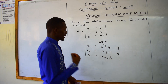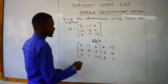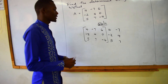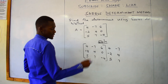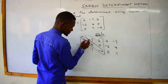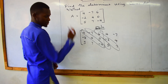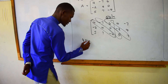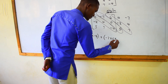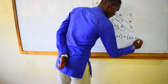Now, where does the Sarrus application come in? By the Sarrus method, you multiply the elements that appear in the main diagonal — all three of them — then add those products together. So you take 4 times 4 times negative 4, plus negative 7 times 0 times 5, plus 6 times negative 2 times 7.